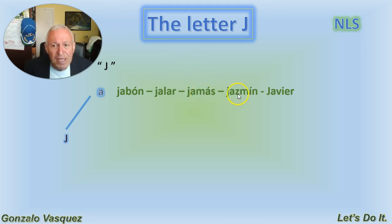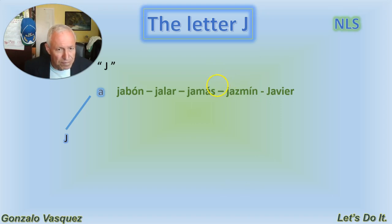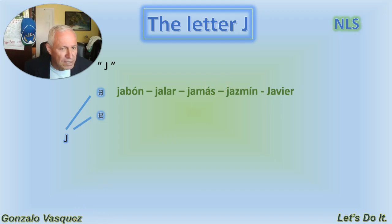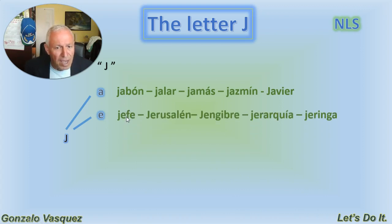So now 'halar' and 'jalar' are synonyms. Ojala — you can say 'ojalá.' Jamás means 'never.' Jazmín is also a flower as well as a proper female name. Javier is also a proper name. Now with the letter E, the sound is 'je.'